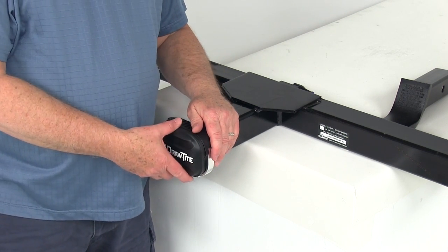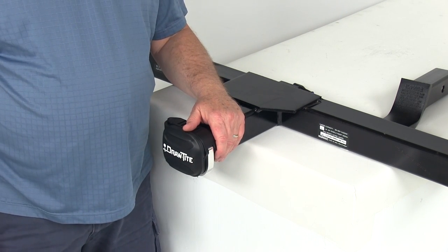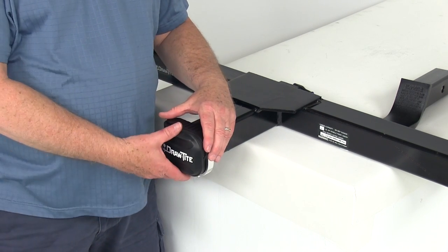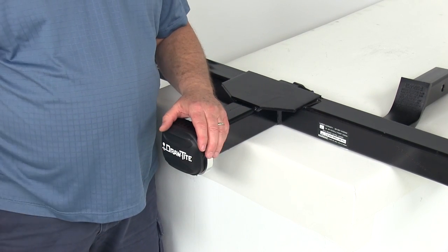But that should do it for the review on part number 63080. The Draw-Tite QSP trailer hitch silencer and cover for the 2-inch hitch receivers.